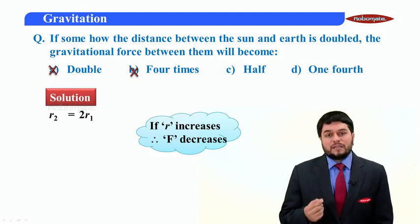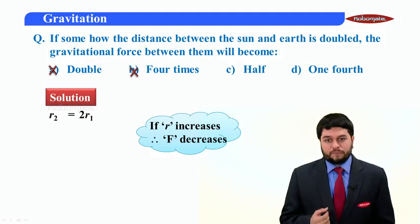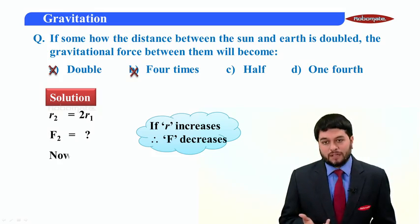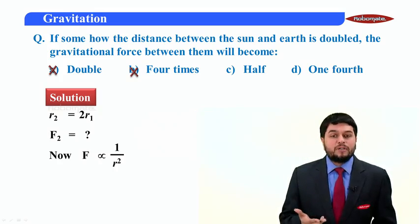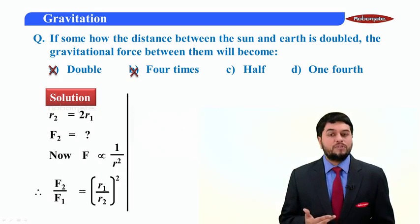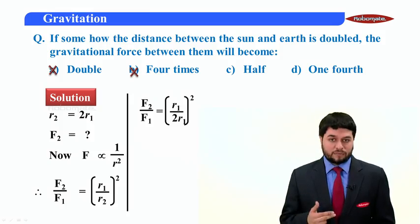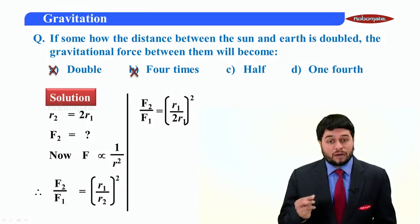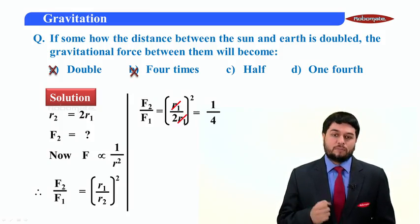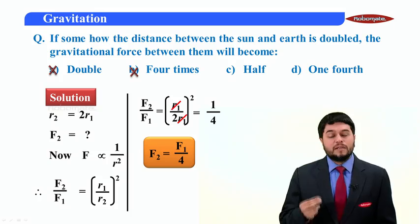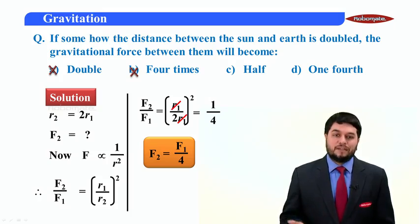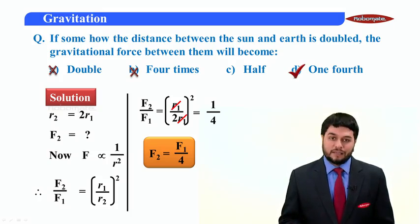If I consider, let's say the new distance is R2, then R2 will be two times R1. We need to find out what is the new force F2. Now, you know that F is proportional to one upon R square. So F2 upon F1 will be R1 upon R2 the whole square. If I put in place of R2, two times R1, I get on the other side R1 upon two R1 the whole square. Cancelling R1, one by two the whole square is one by four. That is F2 is F1 by four. So what is the new force? It's one fourth of the initial. Answer is D. Clear?